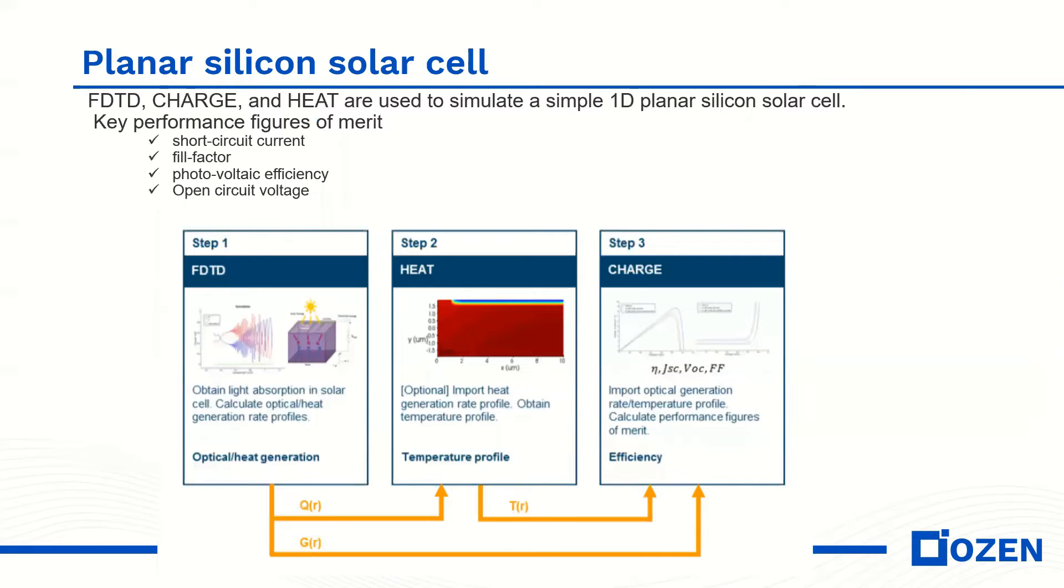For the planar silicon solar cell, we use FDTD charge and heat to simulate a 1D planar silicon solar cell. The key performance figures of merit in solar cell simulation are short circuit current, fill factor, open circuit voltage and photovoltaic efficiency.